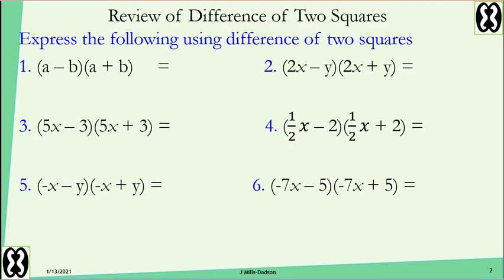Let's review difference of two squares, because it's going to be a major part in our solution today. To express something using difference of two squares, the easy way is to square the first term, square the second term, and put a minus in between the two. For example, a squared minus b squared; 2x squared gives 4x squared, y squared gives y squared, so that gives you 4x squared minus y squared.